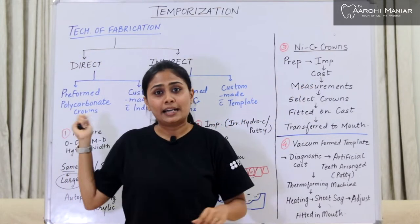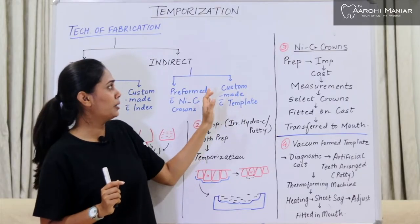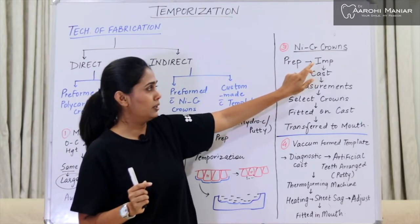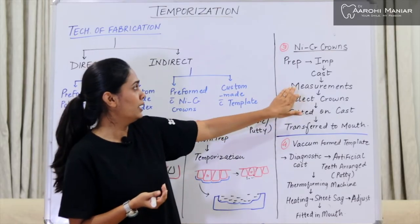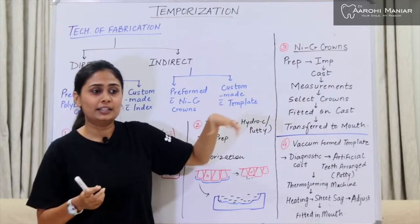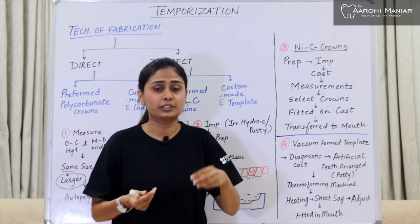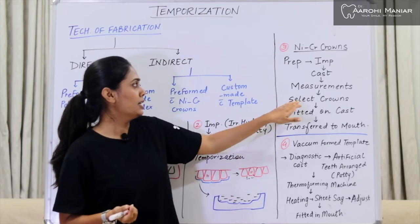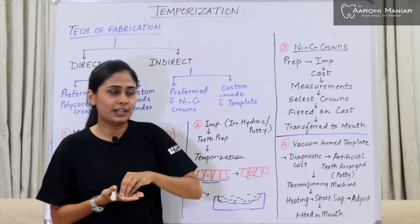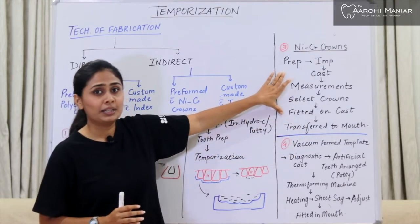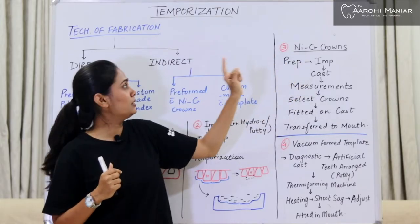For the nickel-chromium crown indirect method, we prepare the tooth first — unlike direct methods where we took the impression before preparation. Then we take an impression and make a cast from it. On the cast we have our prepared, ground tooth in smaller dimensions. We take measurements and select nickel-chromium crowns from a tray, similar to how in orthodontics we select preformed crowns for molars. We try and fit the selected crown over the cast, and if it fits nicely, we then transfer it to the patient's mouth. This is indirect because the crown selection happens on the cast, not in the patient's mouth.